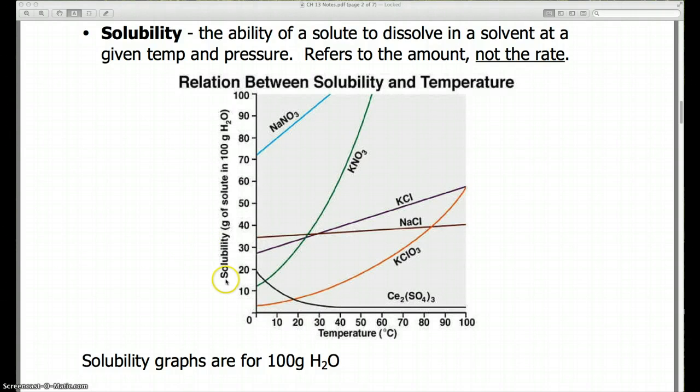So if we have a hundred grams of water at 10 degrees, we can dissolve maybe five grams of KClO3. At 100 grams of water at 10 degrees, we can dissolve for KCl about 30 grams of KCl. So being able to read a graph is important for this unit. There will be some questions on the test having to do with being able to read a graph like this.